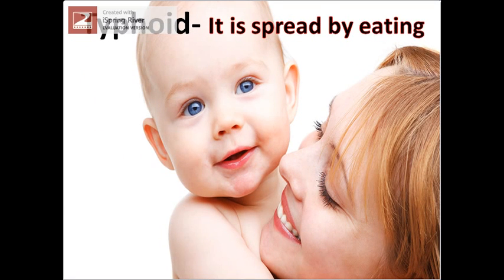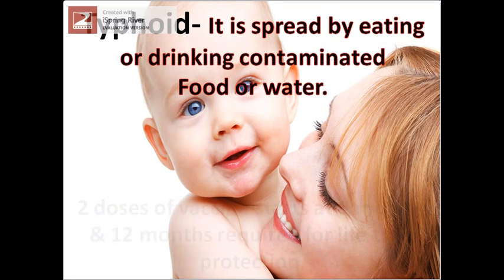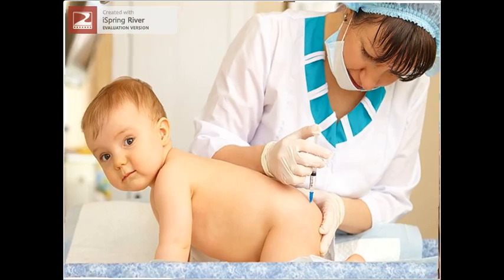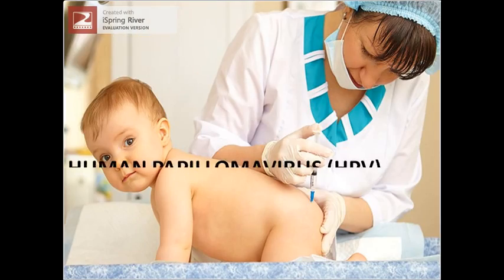Typhoid is spread by eating or drinking contaminated food or water. 2 doses of vaccine starting at 9 months and 12 months, required for lifetime protection.